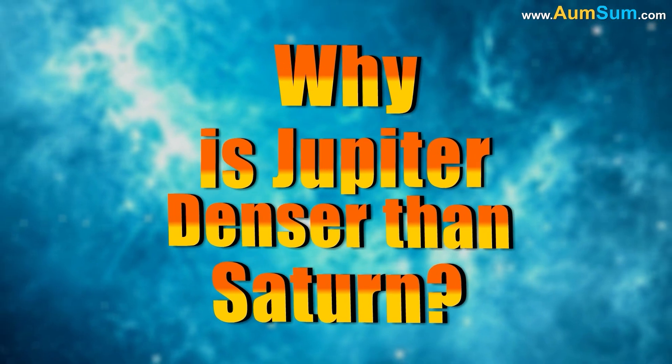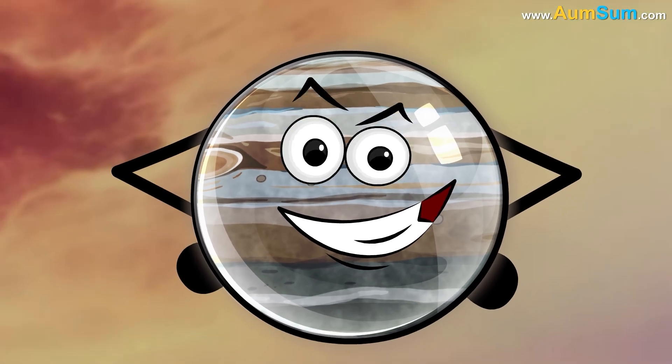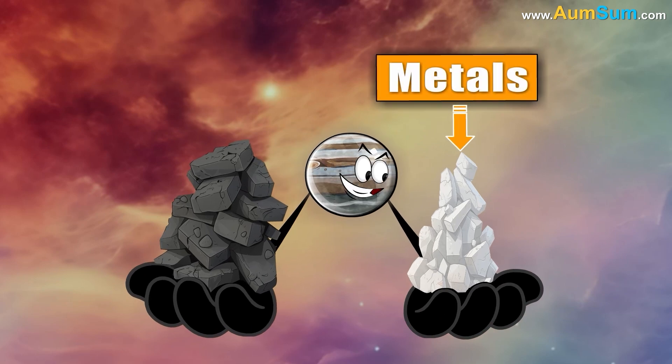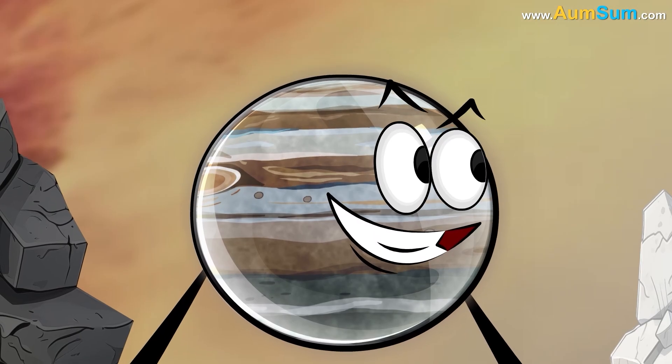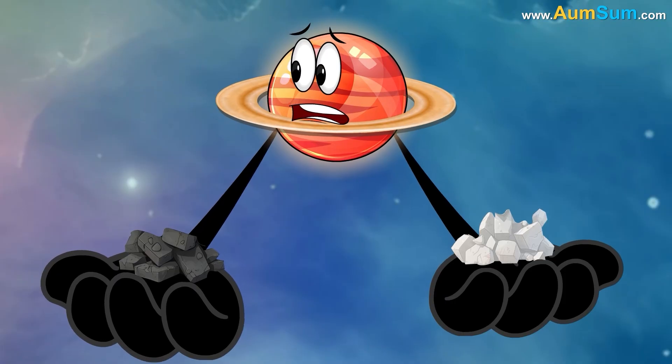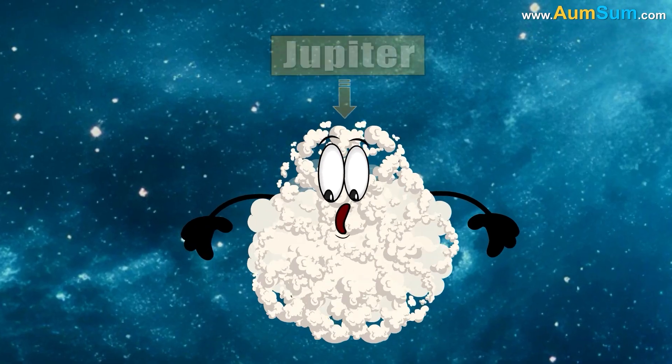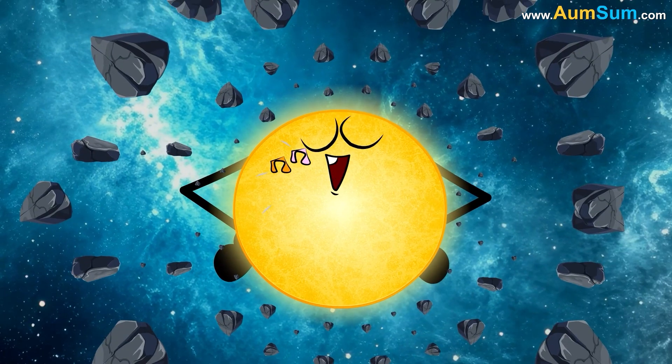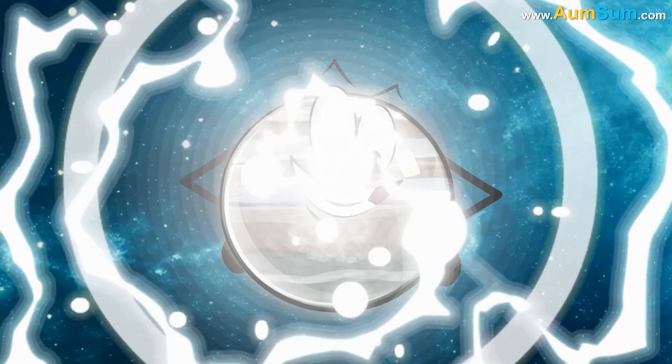Why is Jupiter denser than Saturn? Firstly, Jupiter contains a higher proportion of heavy elements like rock and metals than Saturn. This is because Jupiter was closer to the Sun during formation, allowing it to capture more of these materials.